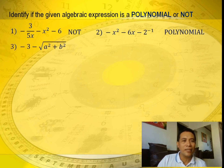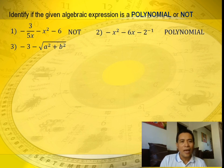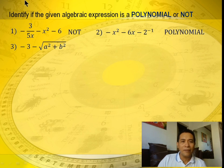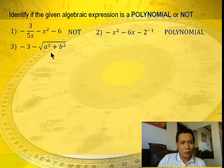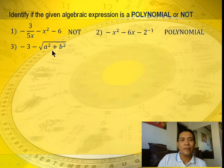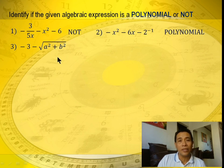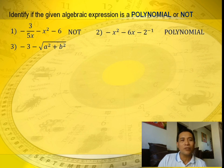Example number 3: negative 3 minus the square root of a squared plus b squared. Take note that our variables here are a and b. When you convert this to exponential form, the square root of a squared plus b squared equals a squared plus b squared raised to 1 half. We'll have an exponent of 1 half, so definitely this is not a polynomial.